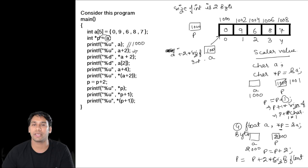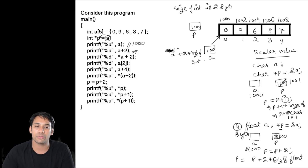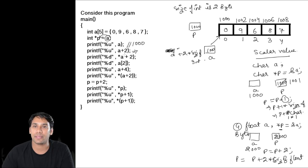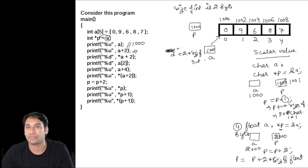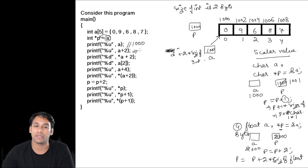Coming back to this program: we have A + 2 and the value stored by A is 1000. When printing A + 2, it increments by 2 × sizeof(integer). With integer size of 2 bytes, this is 1000 + 2 × 2 = 1004. Therefore, this statement is going to print 1004.